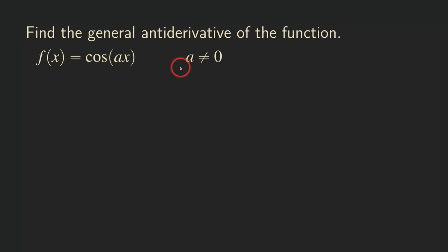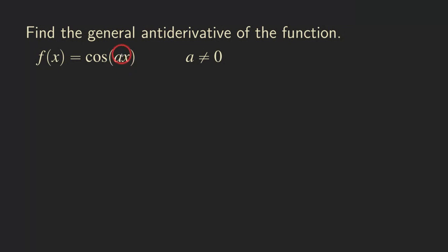Now we are going to assume that a is not equal to 0 and find the general antiderivative. One thing that's really important to remember is that when we differentiate a trig function with a linear function inside, we differentiate the outer trig function, and then we multiply by the derivative of the linear inner function — that's what the chain rule tells us. Because it's a linear function inside, we are going to generate that coefficient a in front.